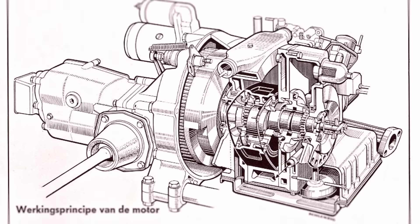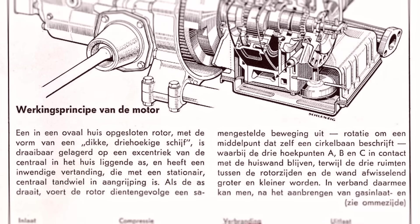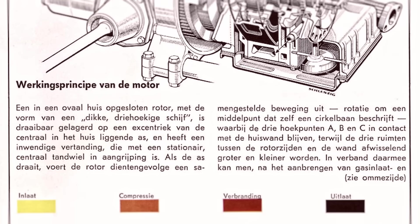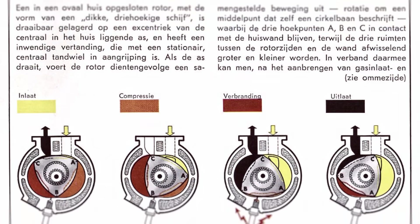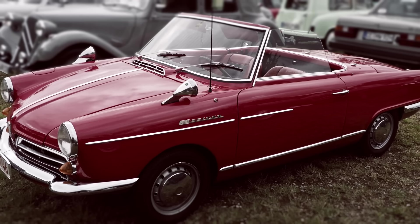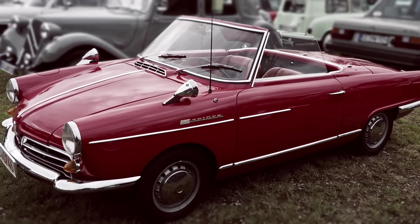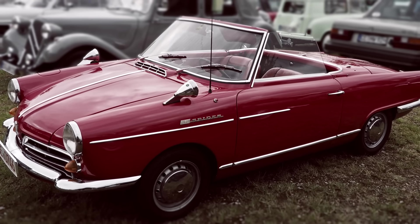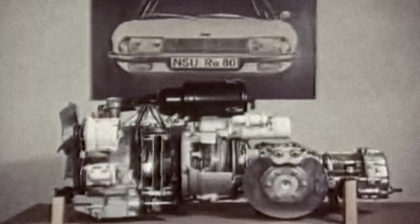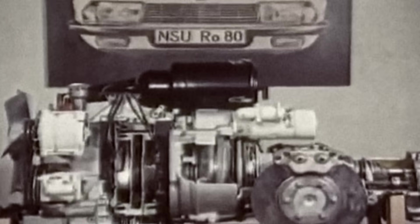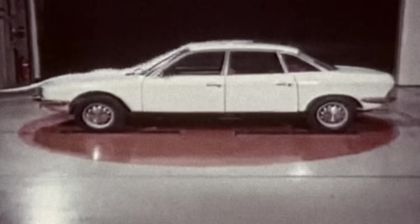At the time, NSU was spearheading research and development efforts to bring the first Wankel-powered automobile to the market. NSU was eventually successful with the release of the NSU Spyder, which came equipped with a water-cooled single rotor engine and standard front disc brakes. NSU's follow-up to the Spyder was the Rho 80, which was believed to be ahead of its time, though it was quirky by modern standards.